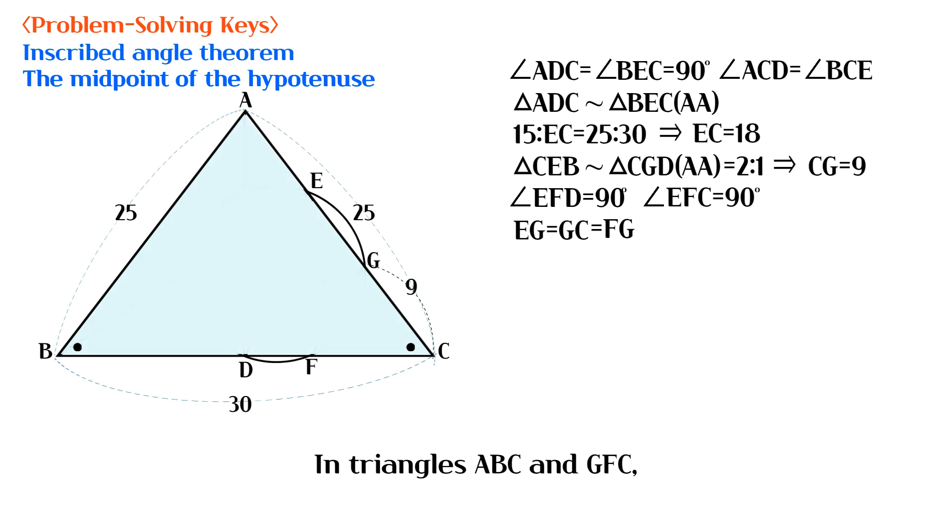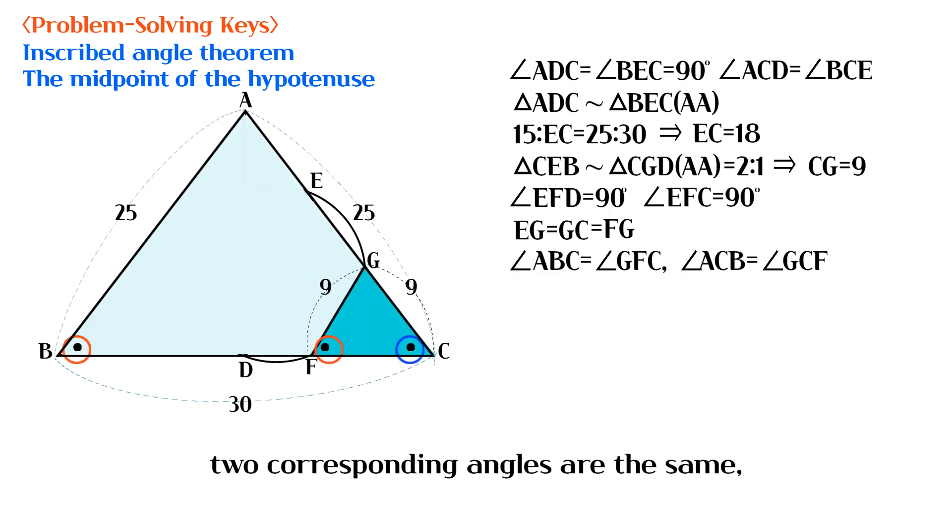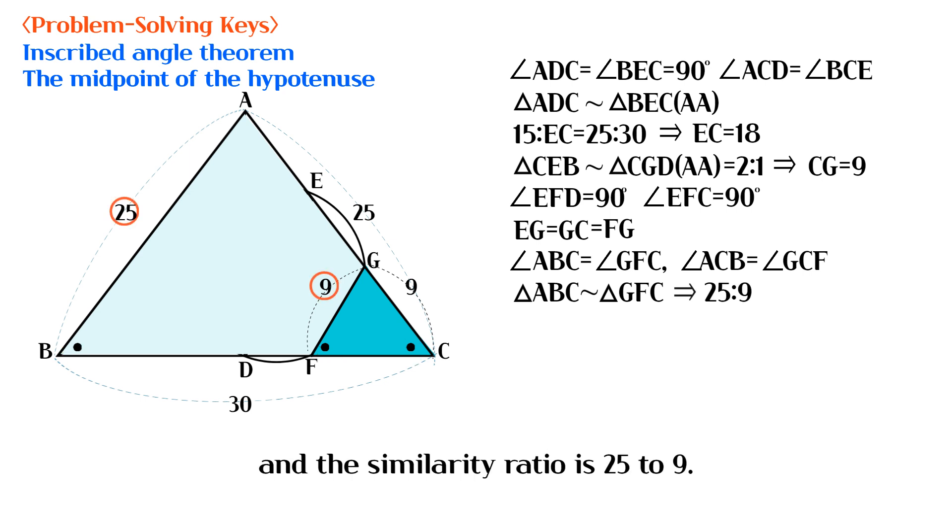In triangles ABC and GFC, two corresponding angles are the same, which means they are similar, and the similarity ratio is 25 to 9.